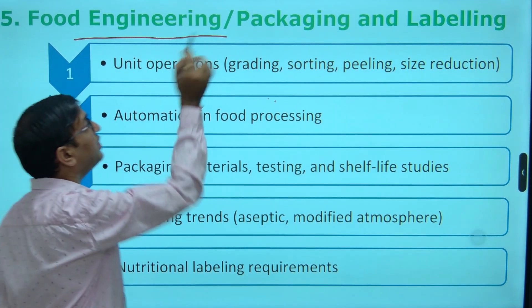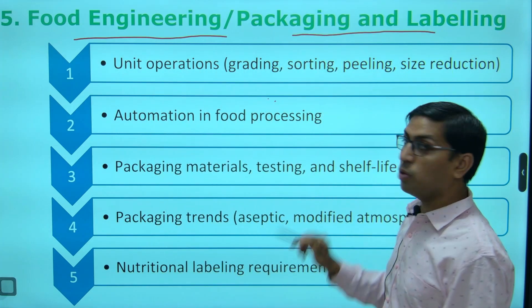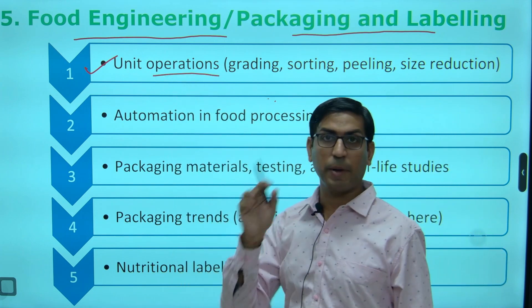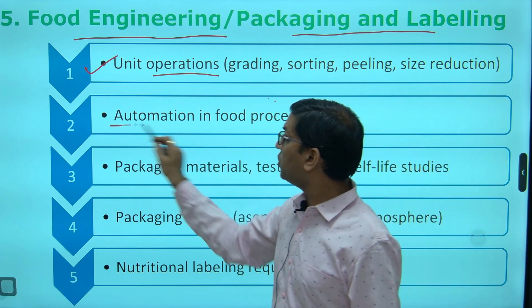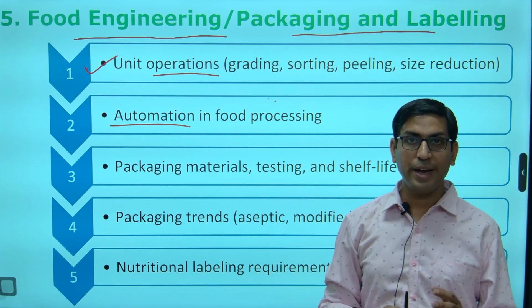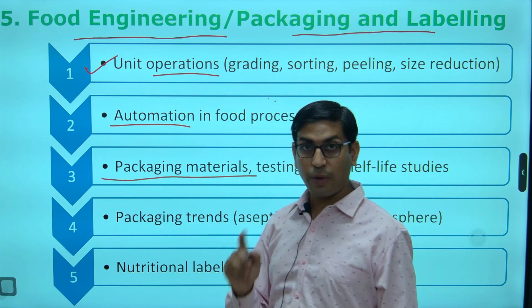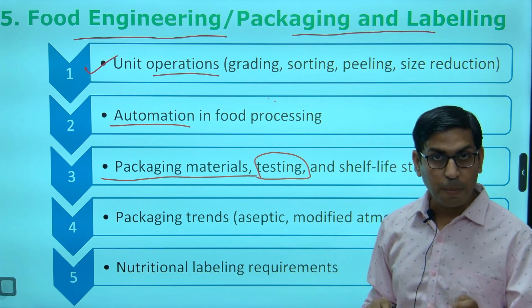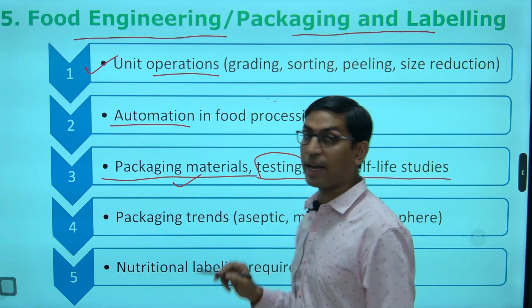With concern to engineering aspects and packaging regulation — both are included. Unit operations, specifically well-covered in the Brennan book — grading, sorting, peeling, all these are there. Automations — currently there is a specific need for automation. Packaging materials, whatever we are using, should be of food grade, and what are the testing parameters — box compression and other testing parameters are definitely important from the packaging material point of view.